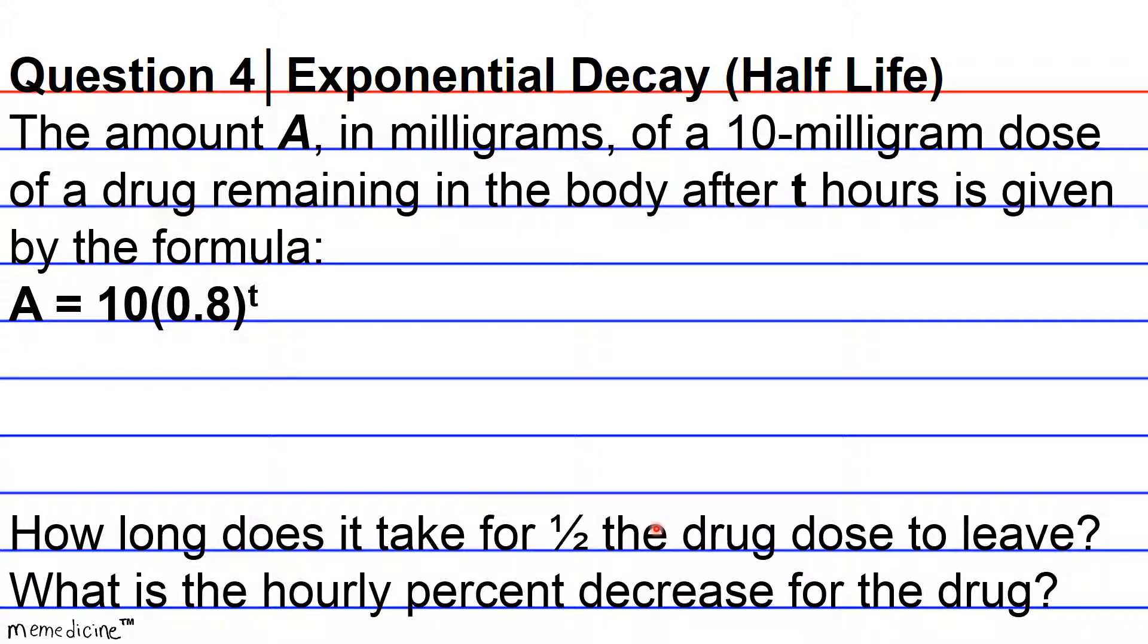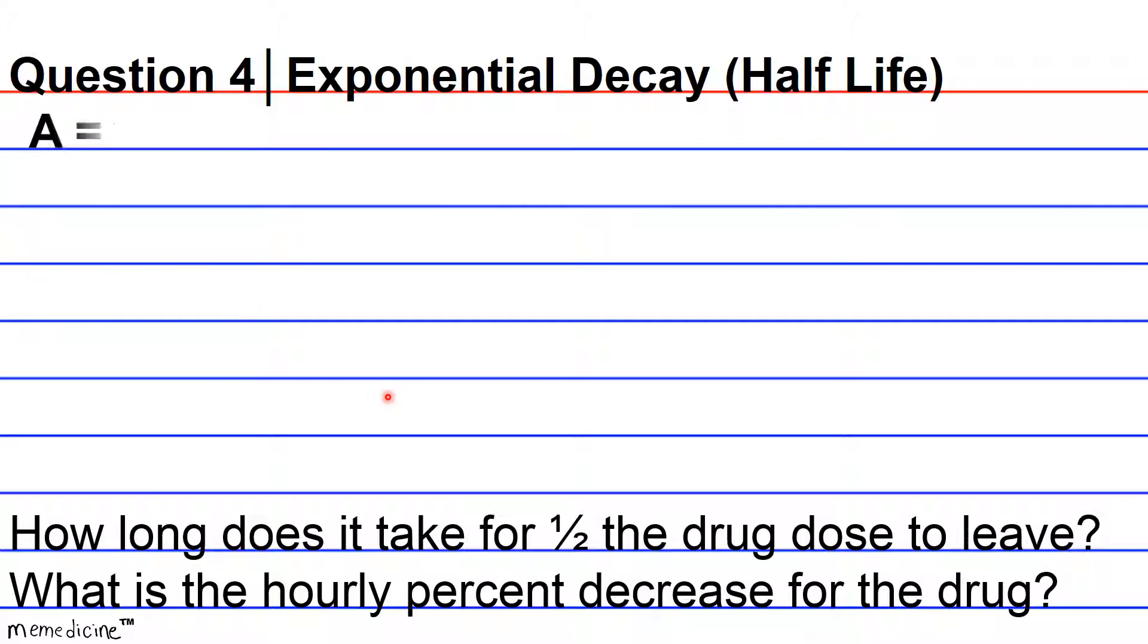Yeah, so that's just common sense. This is the part of algebra that's not just simply 1 plus 1, you have to actually think outside the box in a logical fashion. So we have our starting equation, we're substituting 5 for the remaining amount because we're interested in how long it takes half to leave, so this means that half will remain at the half leaving point.